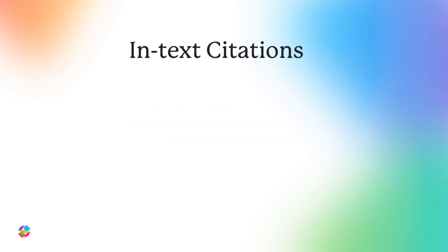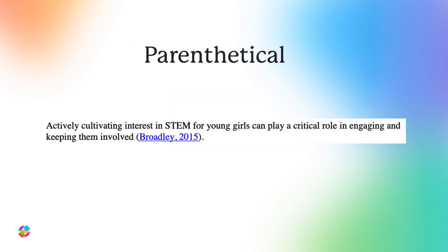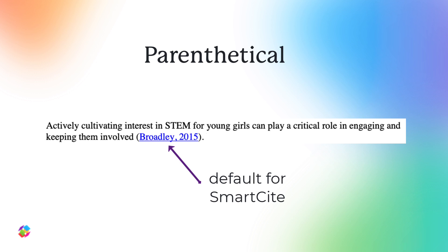There are two main types of in-text citations: narrative and parenthetical. Parenthetical is when the in-text citation is added at the end of the sentence within parentheses. This is used when the author wants to provide references that provide support or give credit, but not quote or refer to the reference directly within the sentence.